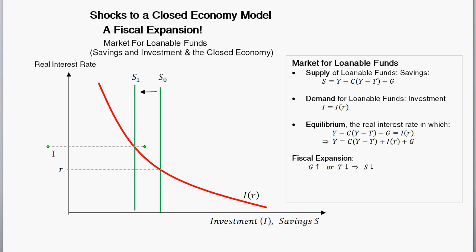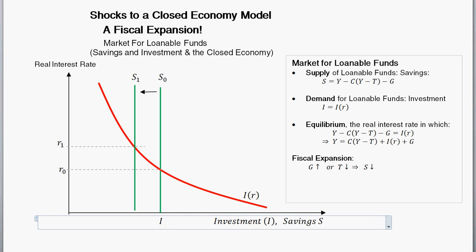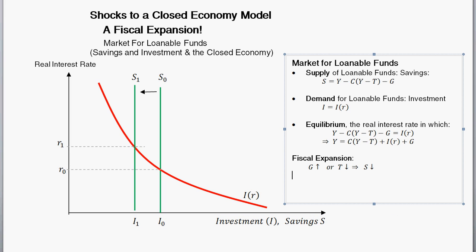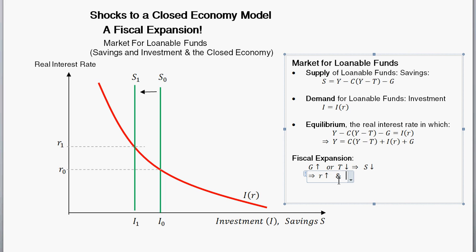The real interest rate must adjust to re-equilibrate the market. We started at real interest rate R-sub-zero, and now it rises to R-sub-one. Investment was at I-sub-zero before, and it falls to I-sub-one. So the fiscal expansion leads to a higher real interest rate and a reduction in investment.